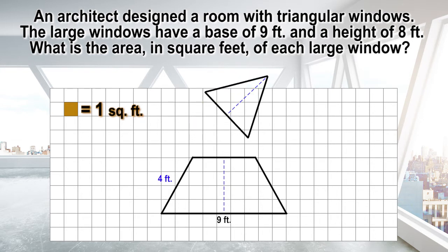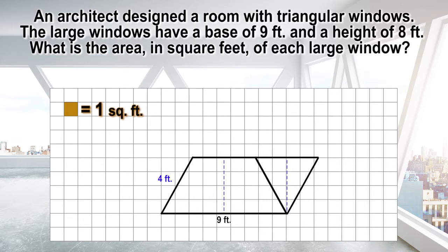Now, rotate the triangle 180 degrees until it fits along the side of the trapezoid to create a parallelogram. The base of the parallelogram is still 9 feet — the same base as the original triangle; the base measurement did not change. The height of the parallelogram is 4 feet, which is half of the original triangle's height of 8 feet, because the triangle was decomposed to create the parallelogram.